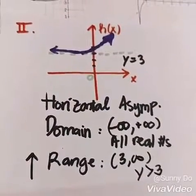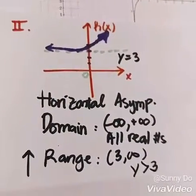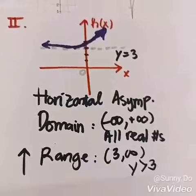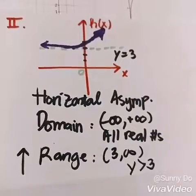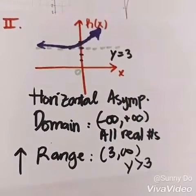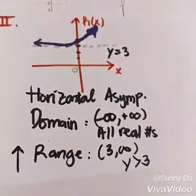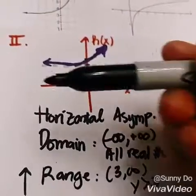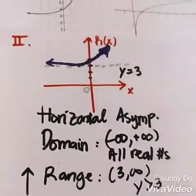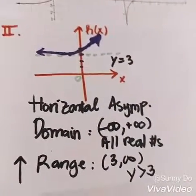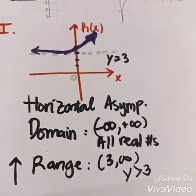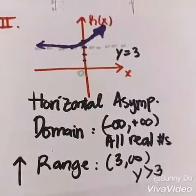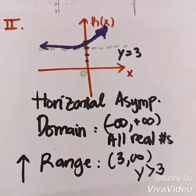That's how you do number 1 of part 2. Horizontal asymptote, domain from negative infinity to infinity — all real numbers. The range goes all the way up from 3, so 3 to positive infinity. 3 is not included because that's the asymptote.